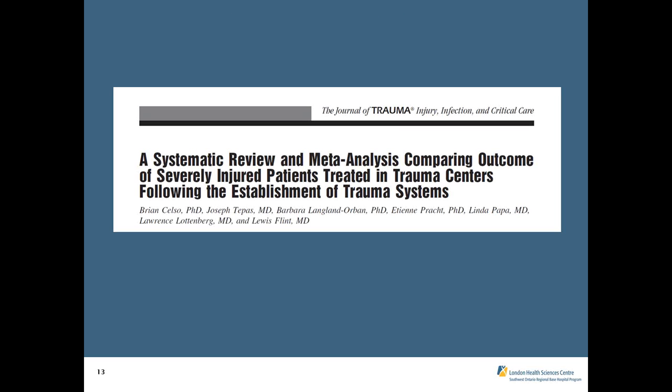Based on literature from the Journal of Trauma, an organized trauma system — excellent pre-hospital ground care, excellent pre-hospital air care, plus organized trauma teams — leads to a mortality reduction. If you have an excellent pre-hospital air and trauma system, there's a 15% reduction in mortality. In Ontario, the vast majority of patients going to trauma centers go by ground. Air ambulances are few and may be occupied with another call, so ground transport is one of the most important factors for our community-based pre-hospital care trauma network.